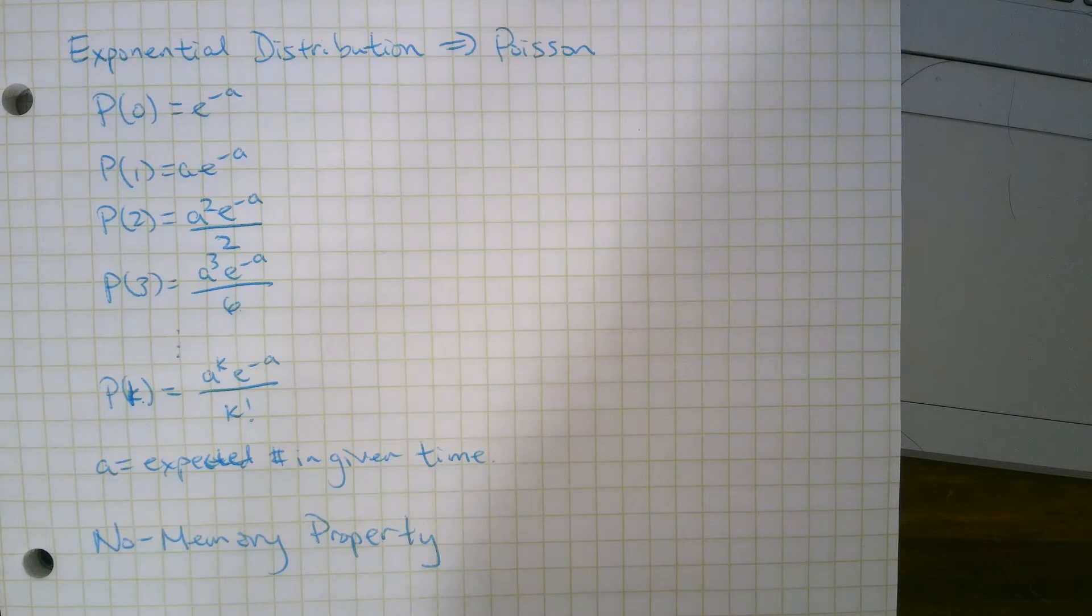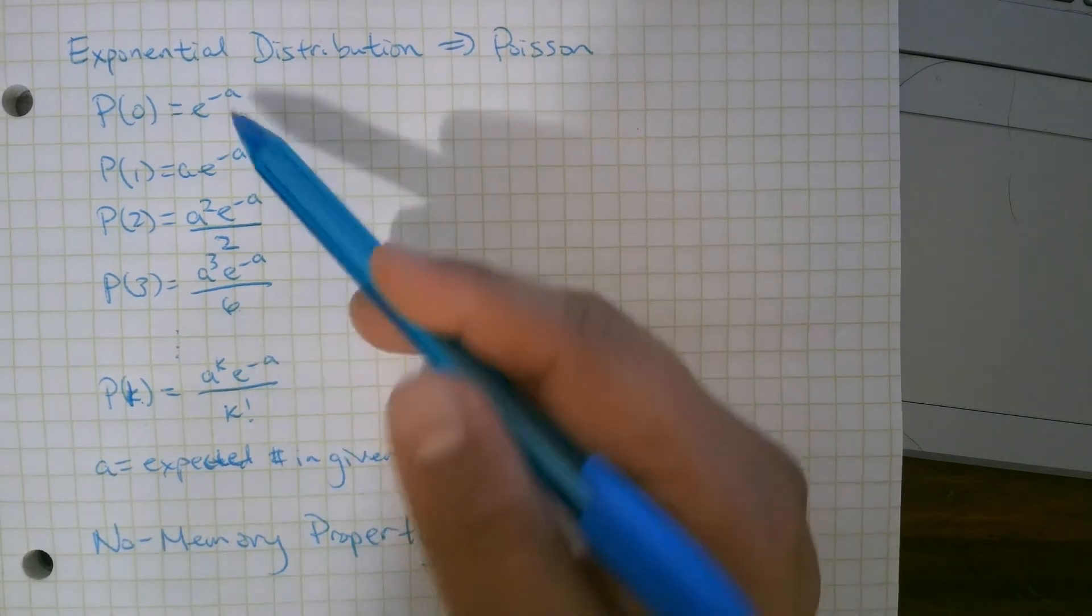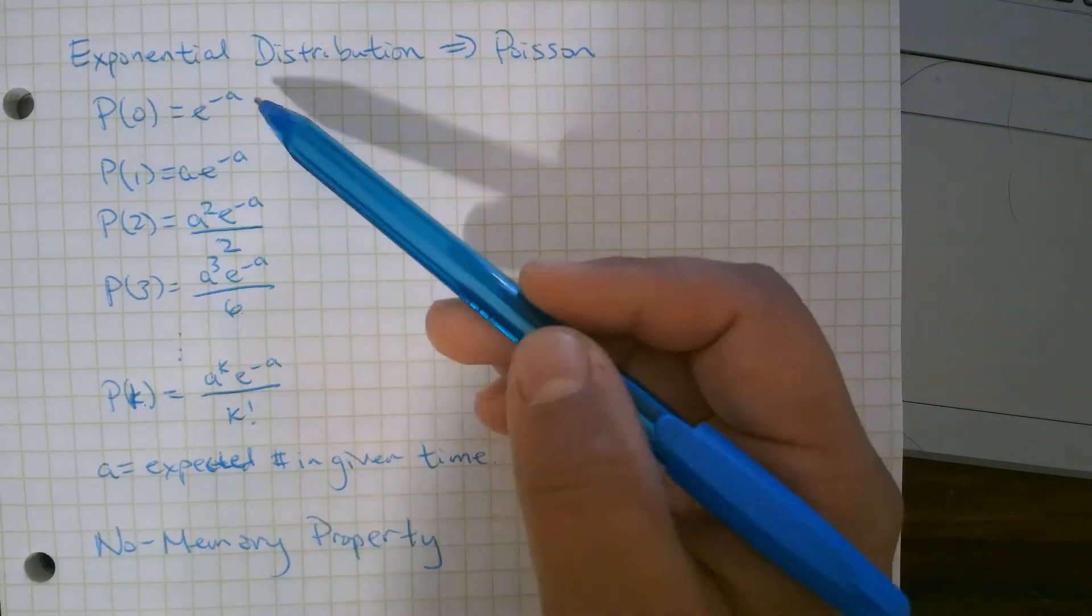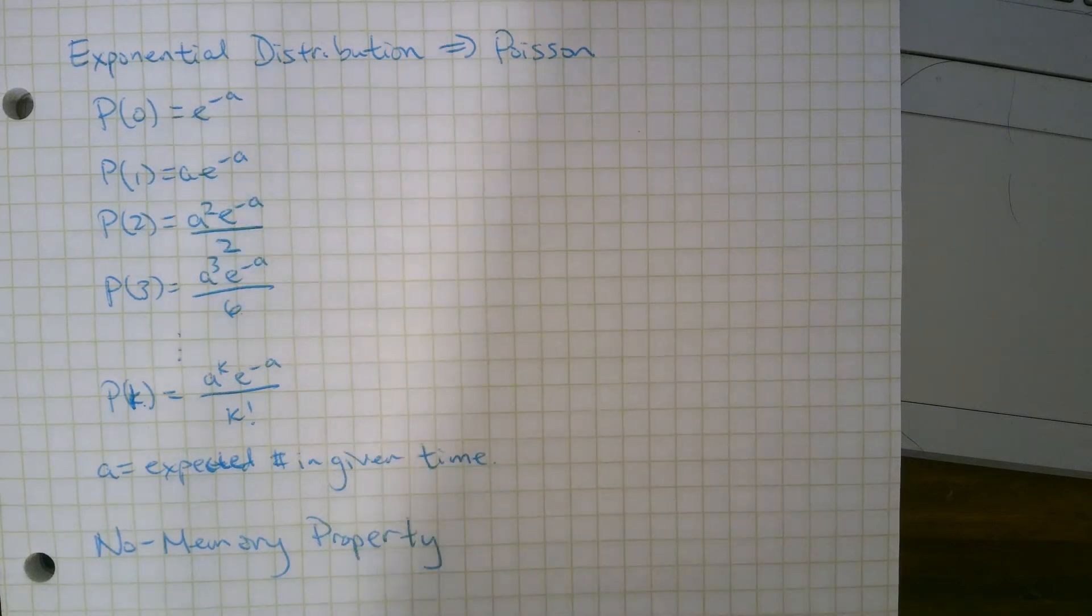So remember when we did customers in a day, if we expect 50 customers in a day, for example, then this a value for all of these is 50. If this makes sense, if we expect 50 customers in a day, the probability of zero customers should be very small, e to the negative 50.